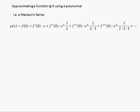At around x equals zero. How they do it is: the value of the function at zero, plus the derivative at zero times x, plus the second derivative at zero times x squared times a half, plus the third derivative at zero times x cubed times a half times a third, etc. This is a kind of clumsy looking formula.